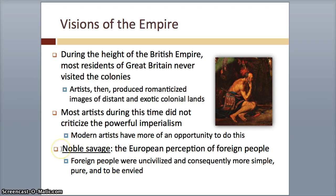There's also this key term called the noble savage. This is the perception of foreign people — they were uncivilized and consequently more simple, pure, and to be envied. So the noble savage was somebody that they actually admired because, oh, they're so nice and humble people. Too bad we can't be like that. So this was this term called the noble savage.